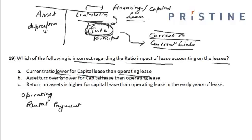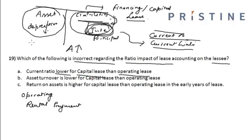In the capital lease we are including something on the asset side as well as the liabilities side, so my asset value as a whole goes up. The asset turnover ratio has assets in the denominator, so it goes down. Hence my asset turnover is lower for capital lease than the operating lease.